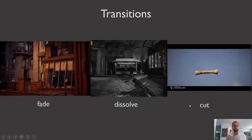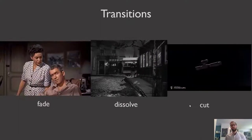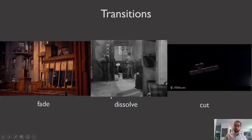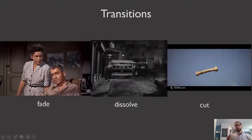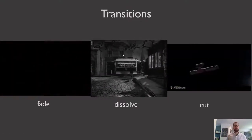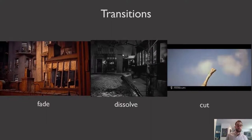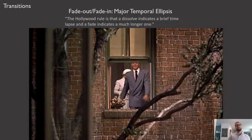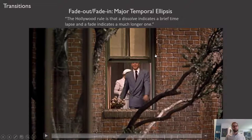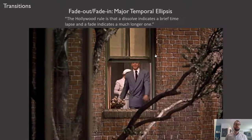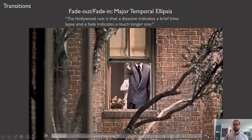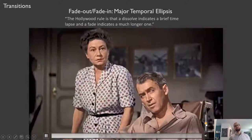There are other kinds of transitions between shots. They can include a fade or a dissolve. We're going to talk about what fades and dissolves generally signify in terms of temporal ellipsis — that is, eliding over time, showing a gap in time. Fade out and fade in represent a major temporal ellipsis. Bordwell and Thompson say the Hollywood rule is that a dissolve indicates a brief time lapse and a fade indicates a much longer one. Think about how much this happens in Rear Window.